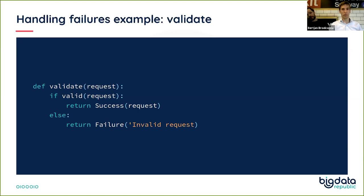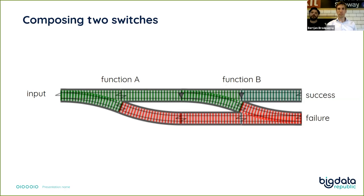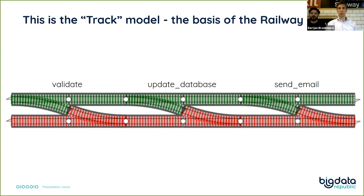Now if we have two switches, we can start composing them again. One function produces either a success or a failure, and another also produces a success or failure — and in the case of a failure, we just bypass. We get a track where on either part of our composition, the function can go on the success track or on the failure track. We can do this with multiple functions: validate, update the database, send an email — compose them all together, creating this long track where either everything goes right or at some point something goes wrong. At the end we get either a success or a failure, which we can deal with.